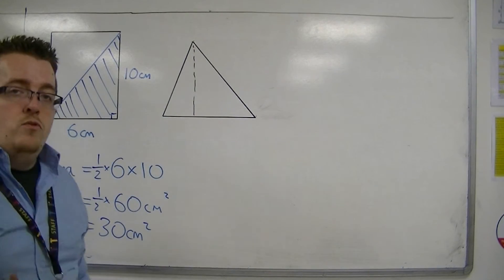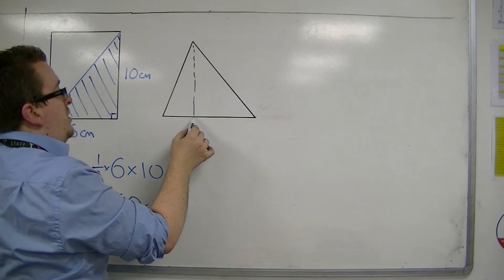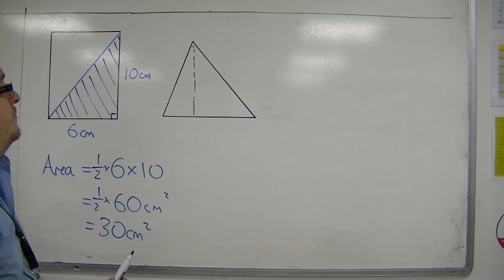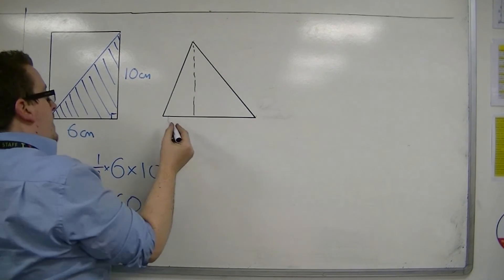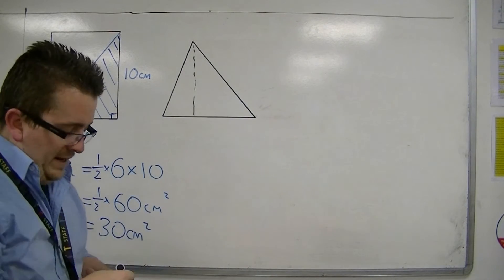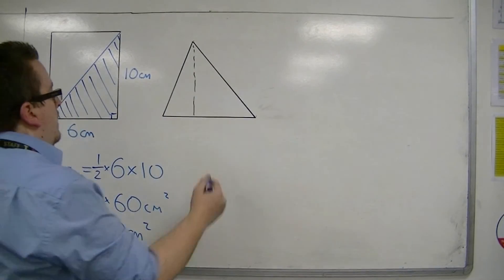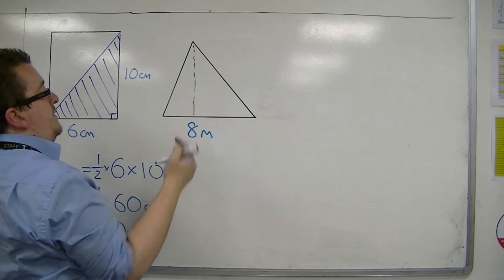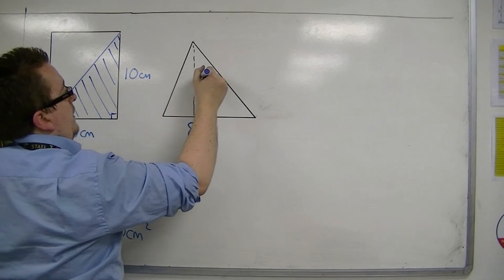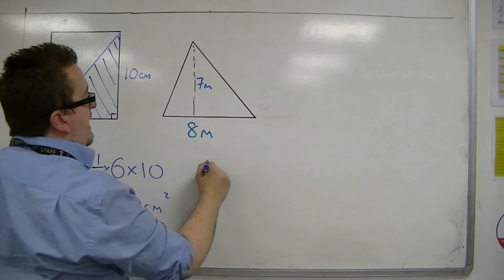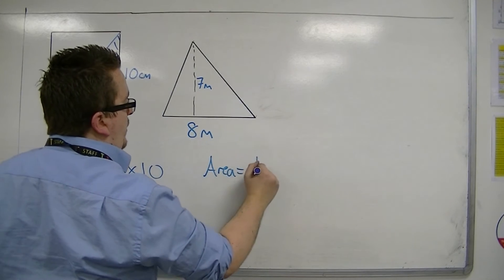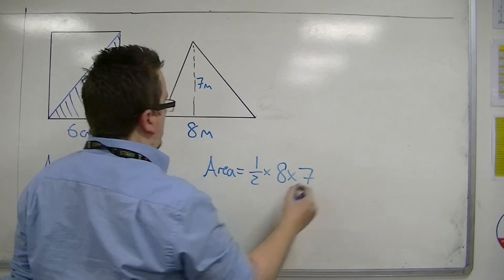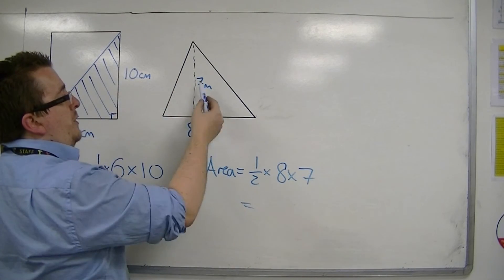But you need to know the height, the vertical height, from the base to the very tip of the shape. If I know that the base is of length, let's say 8 metres, and the height of the triangle is 7 metres, then the area is half of 8 times 7.